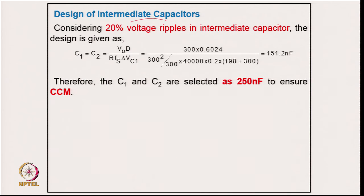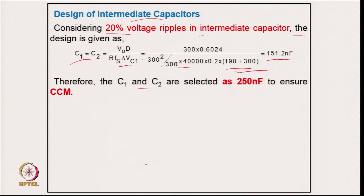For the intermediate capacitors, considering 20 percent voltage ripple: the voltage across the capacitor is the sum of input and output voltage. Putting in all values gives 151.2 nF. Therefore C1 and C2 are selected as 250 nF to ensure continuous conduction mode of voltage across these capacitors.